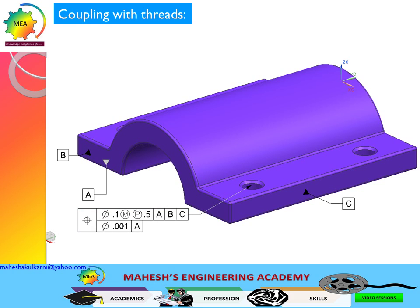Let's look at the feature control frame. The pattern of four threaded holes is controlled by position tolerance with a cylindrical tolerance zone of 0.1 units. And look at the second modifier — it gives you a projected tolerance of 0.5 units.